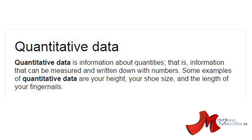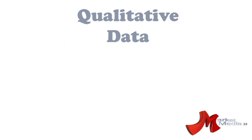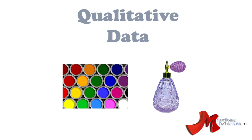Some examples of quantitative data are your height, your shoe size, and the length of your fingernails. How many users visited your website, how many mobile devices visited, and how many visited from certain locations are all examples of quantitative data. This explains the what, but it doesn't explain the why. Qualitative data tells more of the story with data descriptions that cannot be measured, like color of paint or smell of a fragrance.